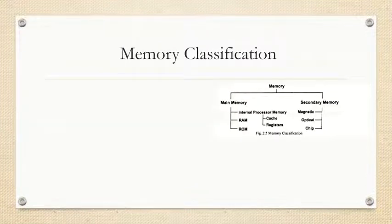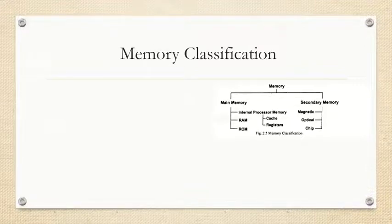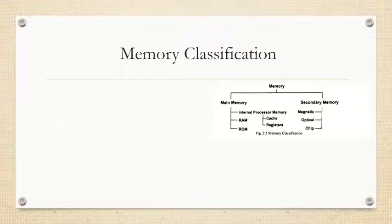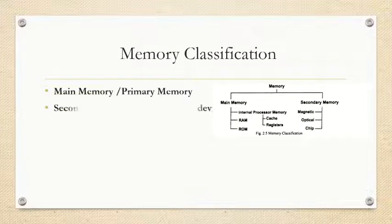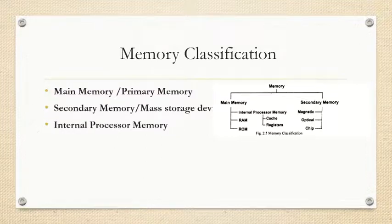Today we will study about memory classification. We have two types of computer memory: main memory and secondary memory. Main memory is further classified into three types: IPM, RAM, and ROM. Internal processor memory is further classified into cache memory and registers. Secondary memory, also called backing storage, is further classified into magnetic memory, optical memory, and chip memory.